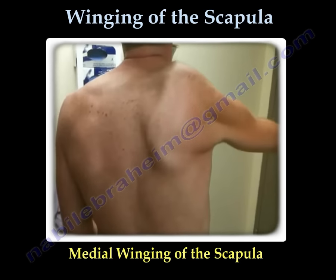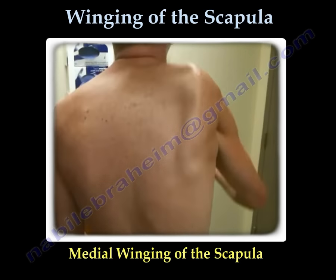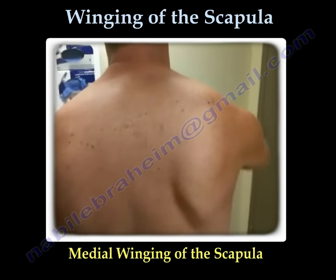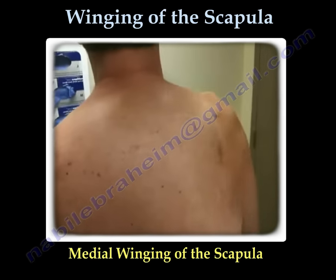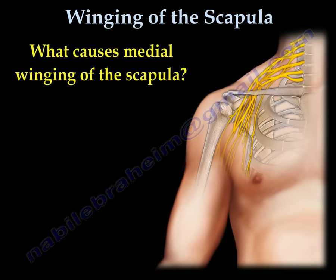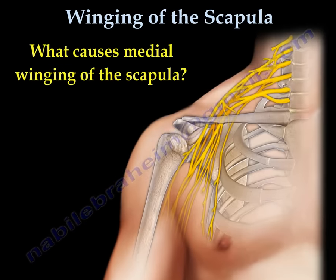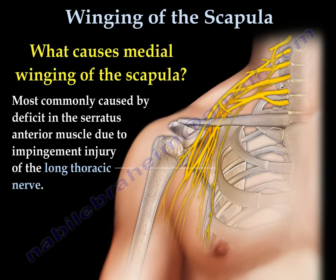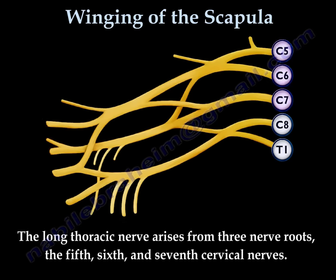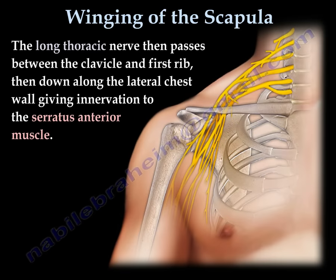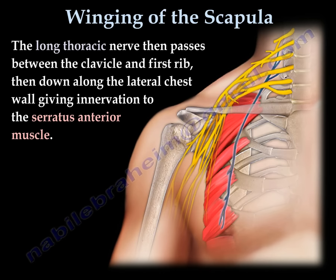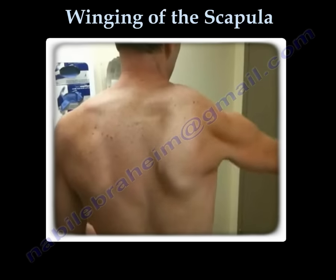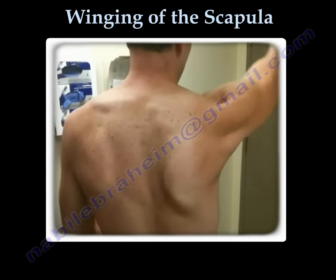Winging of the scapula: the most common type is medial winging. It occurs due to injury of the long thoracic nerve, which arises from C5, C6, and C7. The long thoracic nerve supplies the serratus anterior muscle. Unfortunately, this problem affects young and active individuals.